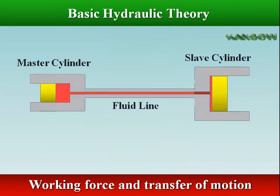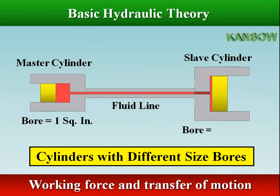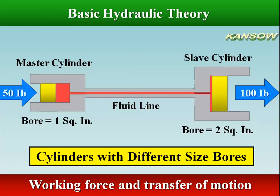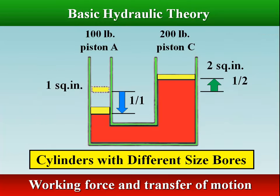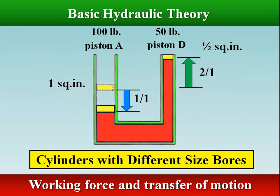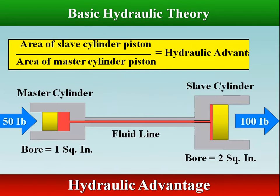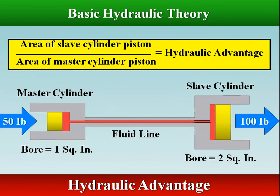By using cylinders of different sizes, forces can be increased or reduced. If the smaller piston is moved, the larger piston will move with more force, but it will move a shorter distance. The ratio of the area of the slave cylinder bore divided by the area of the master cylinder bore determines the hydraulic advantage.